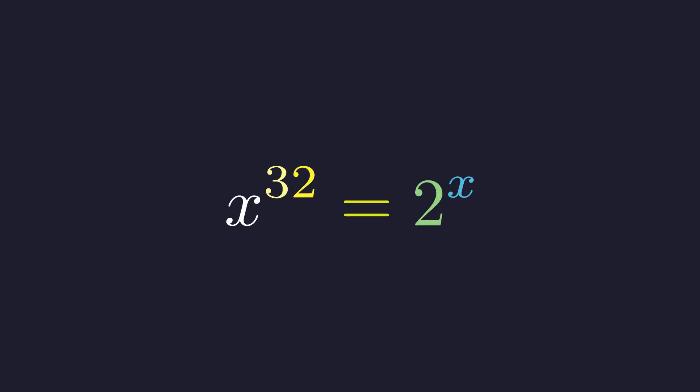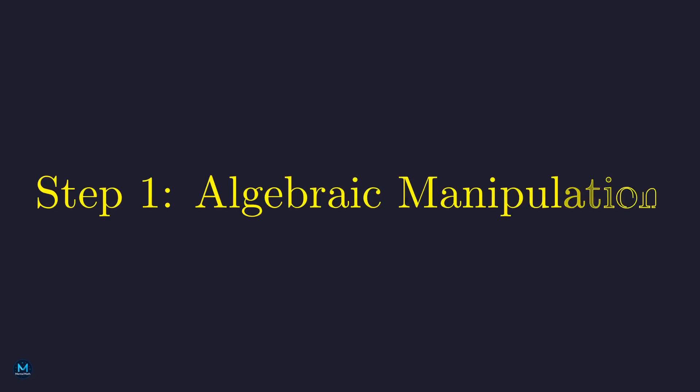We're looking for all real values of x that satisfy this equation: x to the power of 32 equals 2 to the power of x. The variable x appears both as a base and as an exponent. Standard techniques won't work here. We need to restructure this in a clever way.